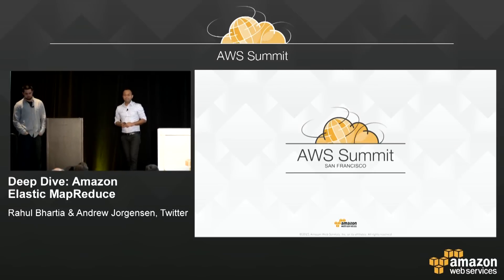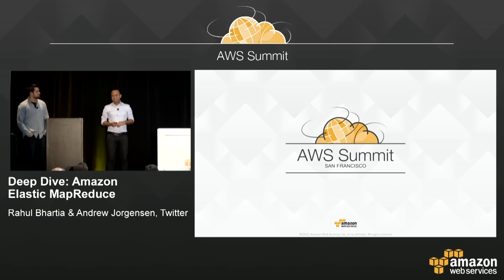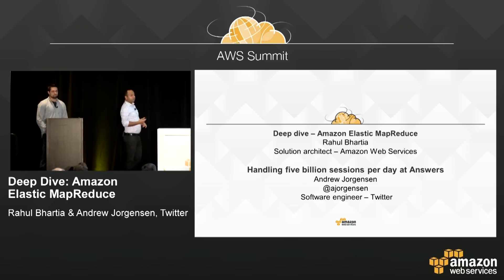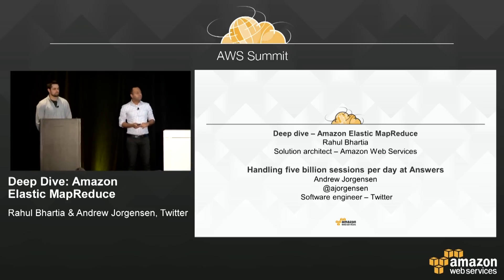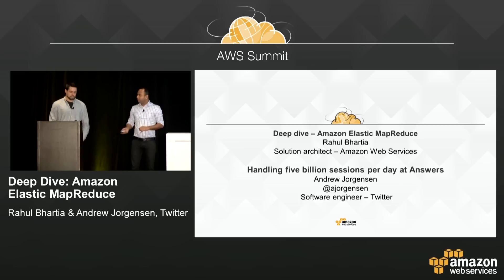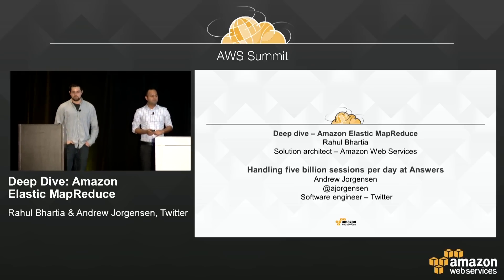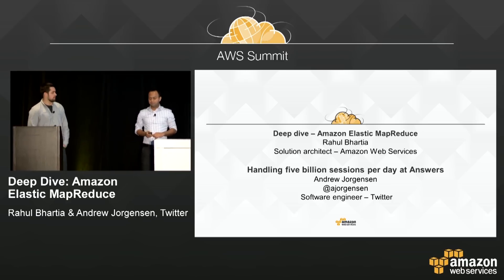Welcome, everybody. Last session of the day — we hope we're not going to hold you too long before your beers. I'm Rahul Bhatia, and I'm going to speak on Amazon EMR, doing a deep dive on some of the Amazon Elastic MapReduce features and service benefits. And with me I have Andrew Jorgensen from Twitter, who is going to talk about how they use EMR to scale to handle 5 billion sessions per day on Answers.